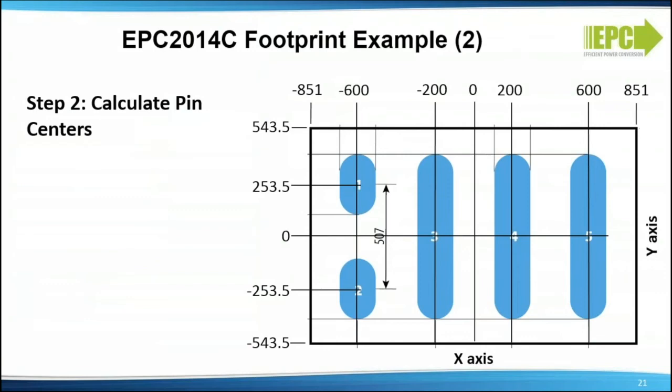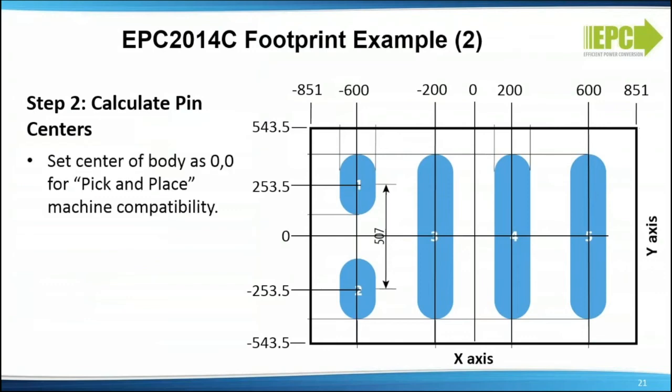Step 2: calculate pin centers. Use the center of the body as origin (0,0) for pick-and-place machine compatibility. Manually enter these precise pin locations in your CAD footprint generator. This ensures that the pads are truly on the centers, independent of your grid system.